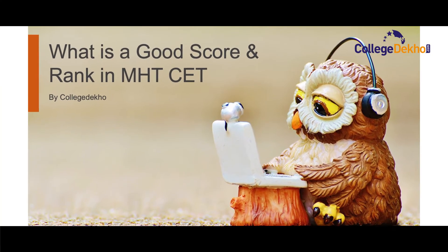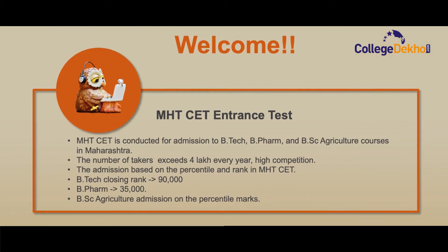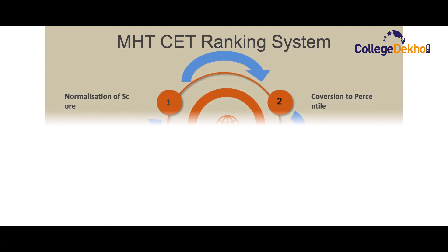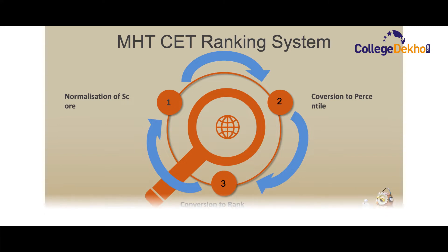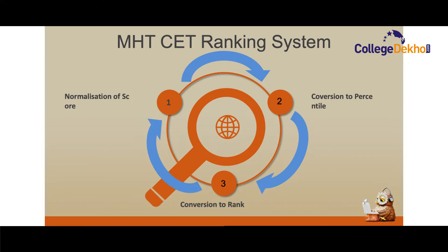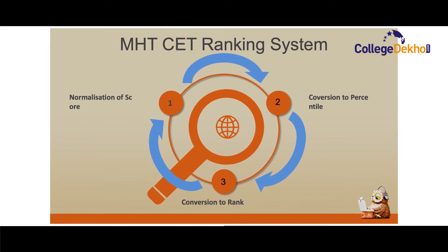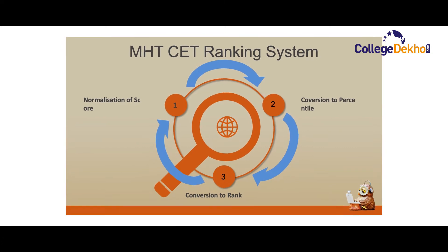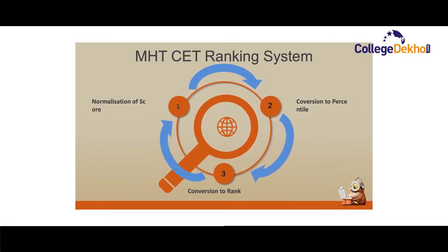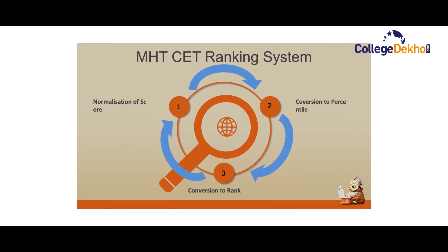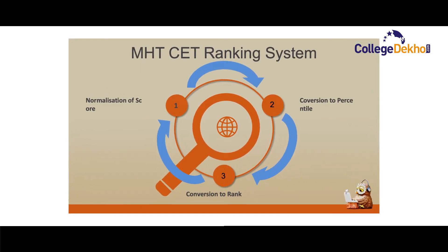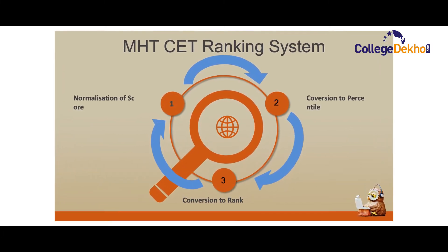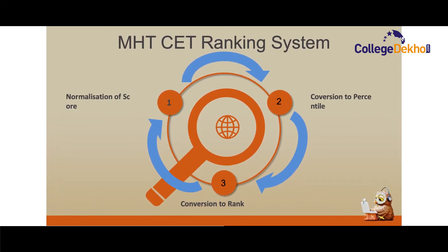Before we move forward to good score and rank, let us first have an idea of the MHT CET ranking system. As the MHT CET is conducted in multiple shifts, the score of the candidate will be normalized and the results are declared in the form of a percentile. Then, based on the percentile secured by the candidates, a merit list will be prepared and released by the State CET Cell. All candidates included in the merit list shall be declared eligible for CAP, i.e., Centralized Admission Process. The merit list will have percentile as well as rank allocated to the candidates.